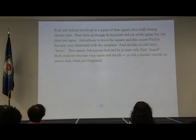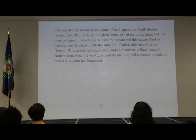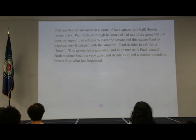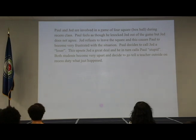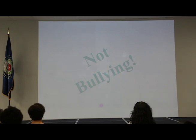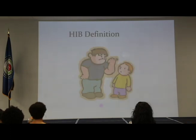Paul and Jed are involved in a game of four square. During recess, Paul fouled Jed and knocked him out of the game, but Jed does not agree and refuses to leave the square. This causes Paul to become very frustrated, and he calls Jed a loser. This upsets Jed, who calls Paul stupid. Both students become very upset and go tell the teacher. This is actually not bullying — this is what we would consider to be conflict between the two students.